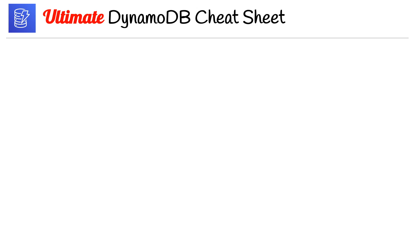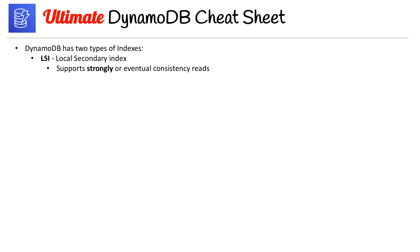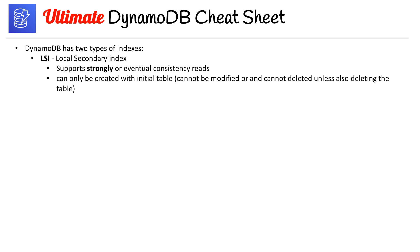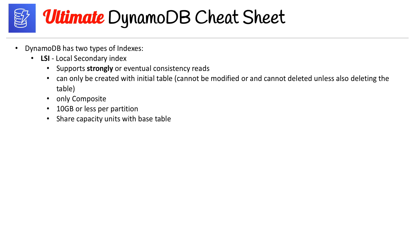On page three: DynamoDB has two types of indexes — LSIs (Local Secondary Indexes) and GSIs (Global Secondary Indexes). LSIs support strongly or eventually consistent reads. They can only be created with the initial table, cannot be modified or deleted unless you're also deleting the table. They only use composite keys, must be 10 gigabytes or less per partition, share capacity units with the base table, and must share a partition key with the base table.